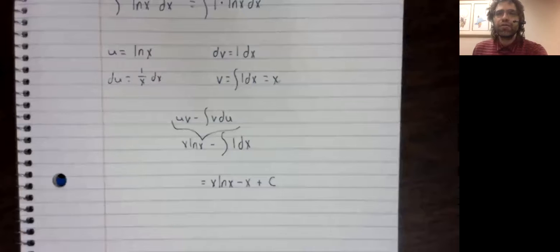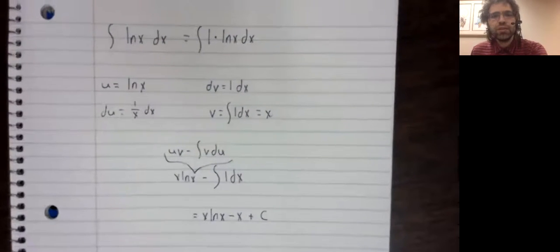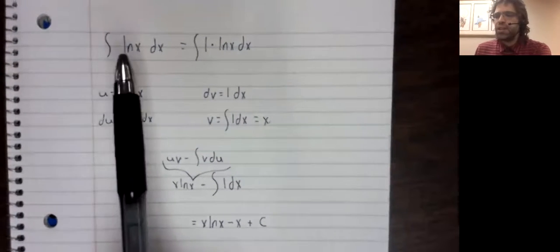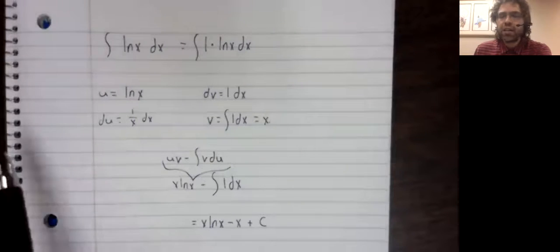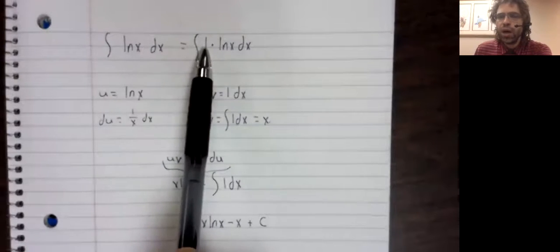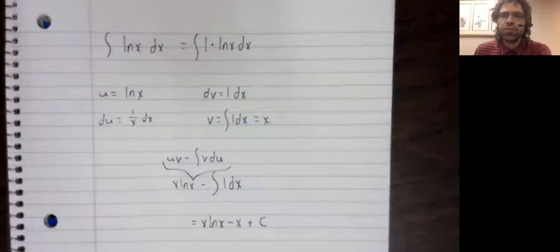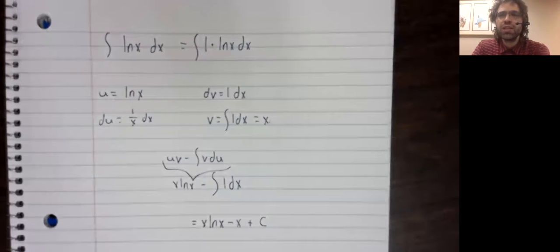Working from memory, so don't quote me on it, but I believe this same trick of writing a function as one times itself will let you take the antiderivatives of the inverse trig functions as well.